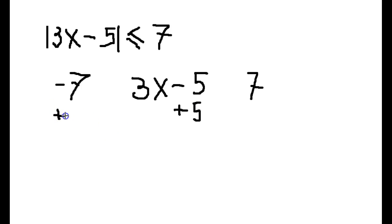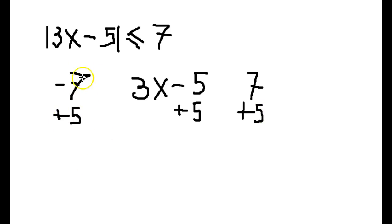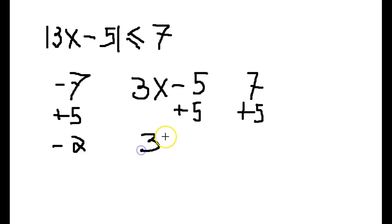We add 5 on the left and on the right. When we simplify each part, on the far left we have negative 2, in the middle we have 3x, and on the far right we have 12.